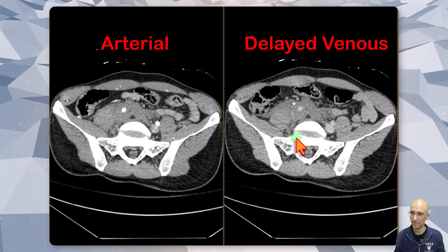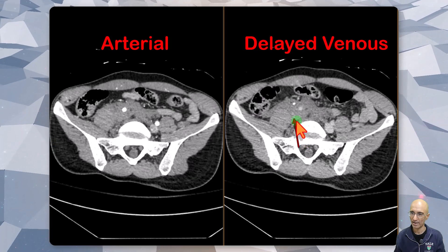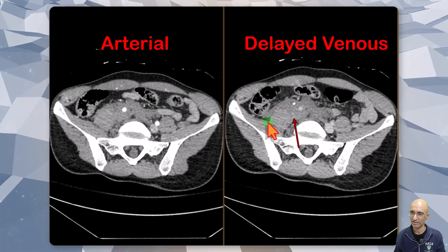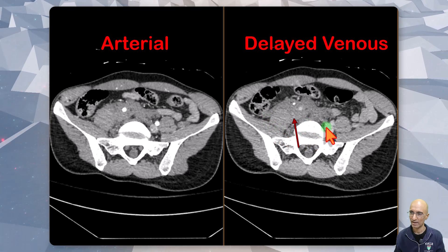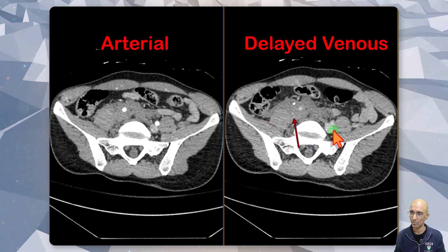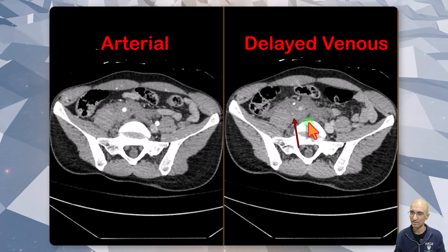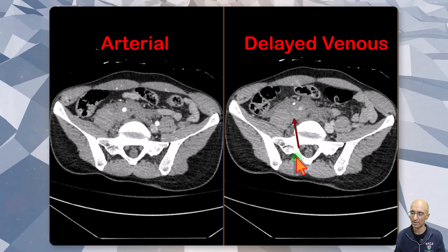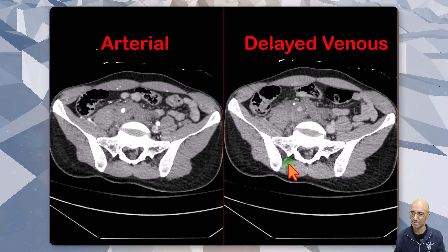As I scroll back and forth, you can see multiple foci of active contrast extravasation in the region of the retroperitoneal hematoma. We can identify the normal iliac vein on the contralateral side, but there is no iliac vein identified on the right side.